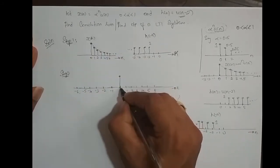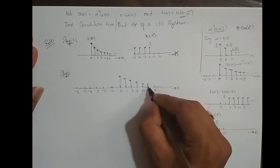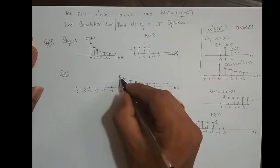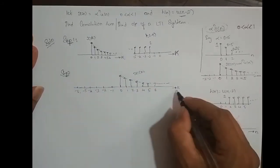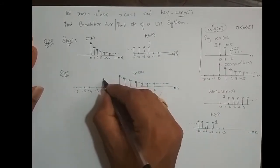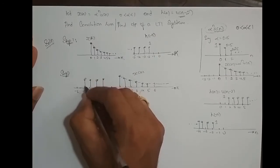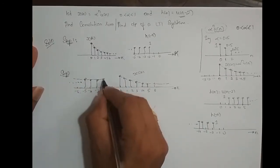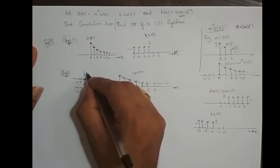x(k) does not change — it is an exponentially decreasing signal starting from 0 and ending at infinity. And h(-k) starts from -2, -3, -4, -5, going on till minus infinity. So this is h(-k) on the same k-axis.